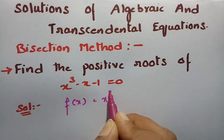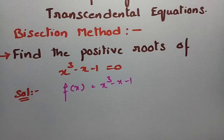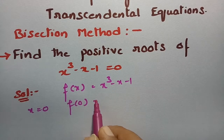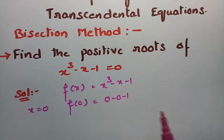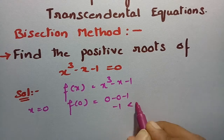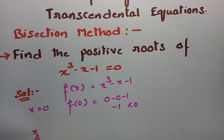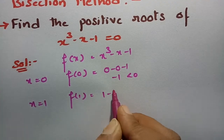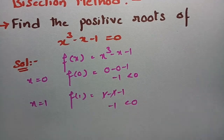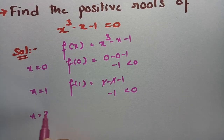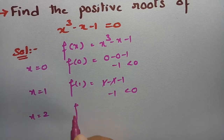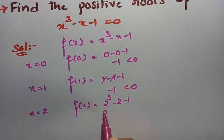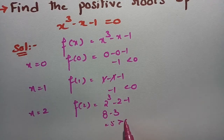In order to use the bisection method, first we consider f(x) = x³ - x - 1. If x = 0, then f(0) = 0 - 0 - 1 = -1, which is negative. If x = 1, then f(1) = 1 - 1 - 1 = -1, which is also negative. So I check x = 2: f(2) = 2³ - 2 - 1 = 8 - 3, which is a positive value.